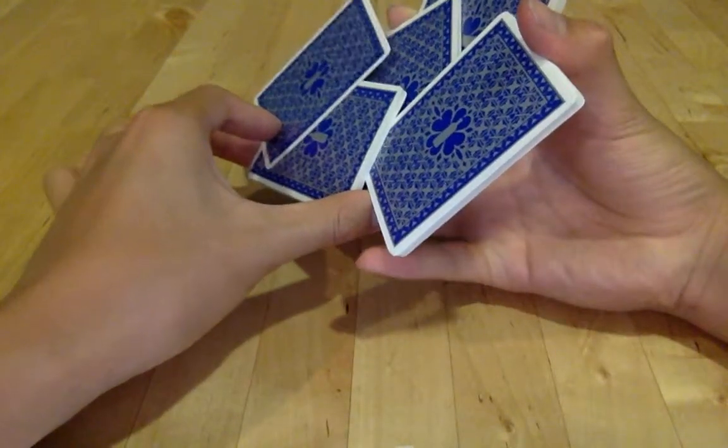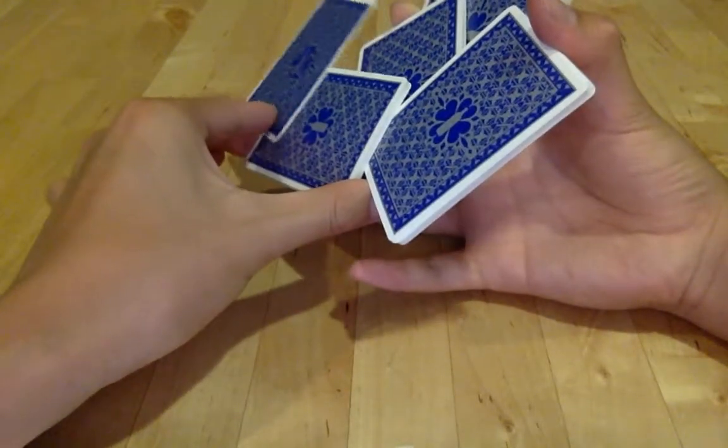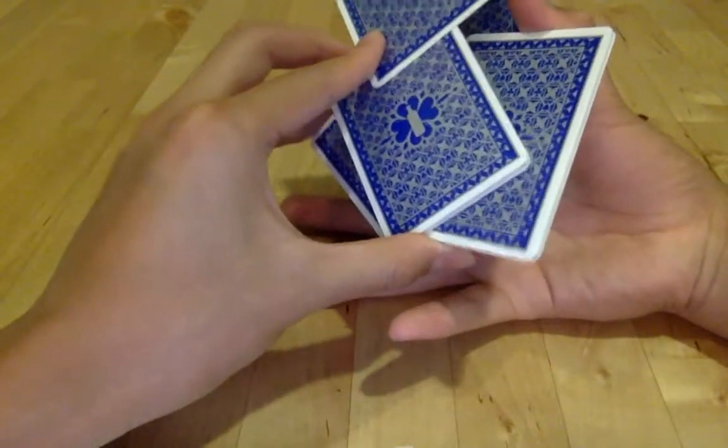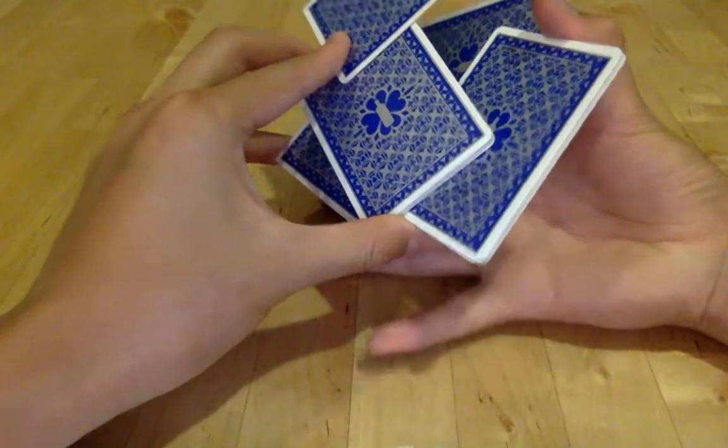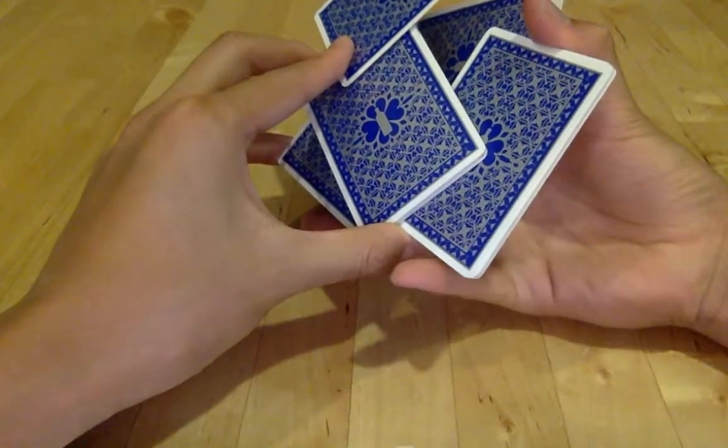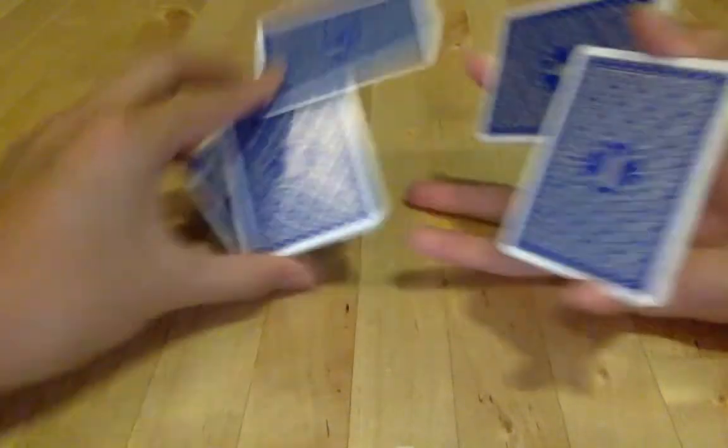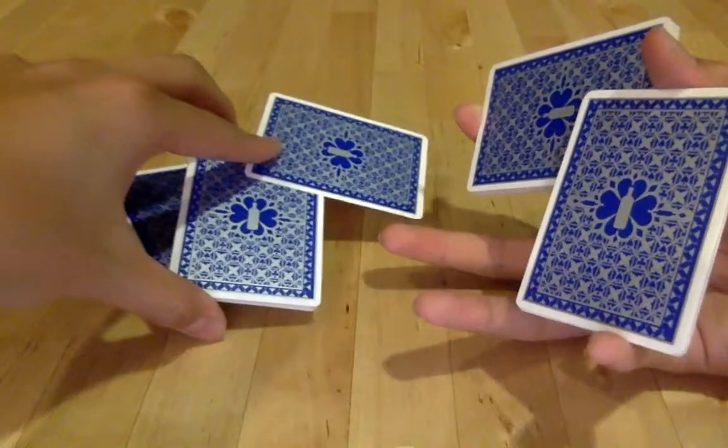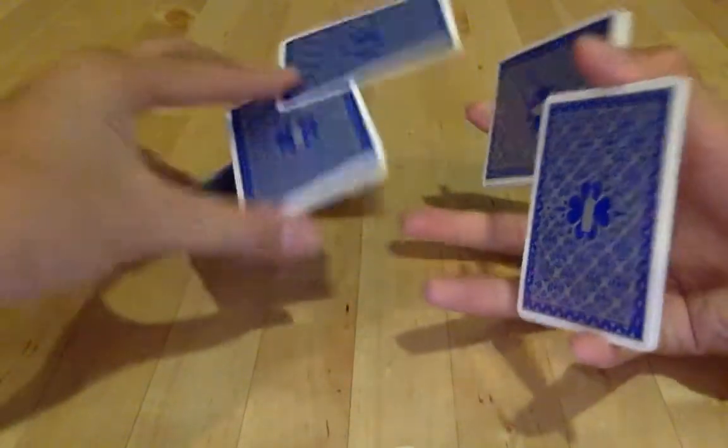What you are going to do next is push the card off and use your ring finger to carry the middle packet up. Your pinky is going to be holding this packet. What you are going to do next is rotate the packet.